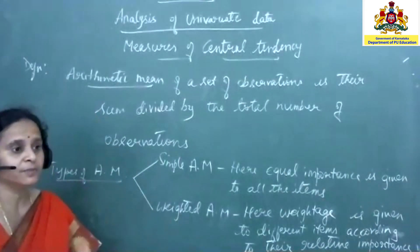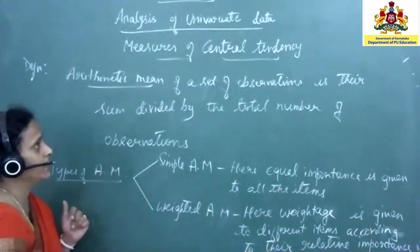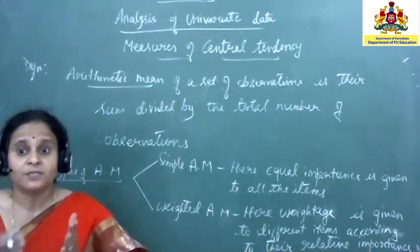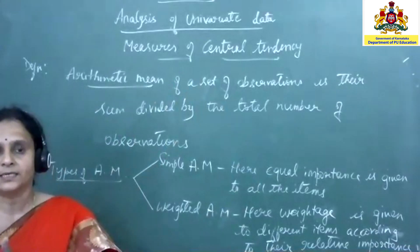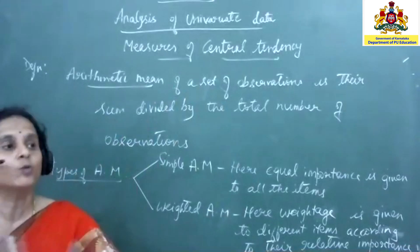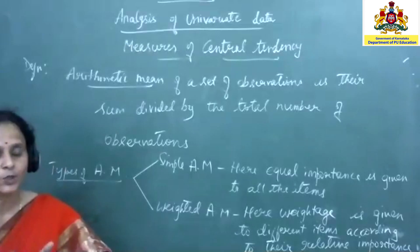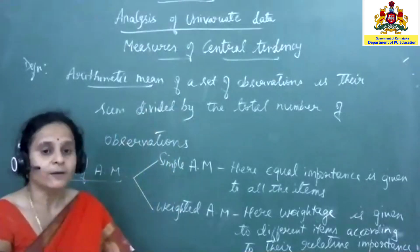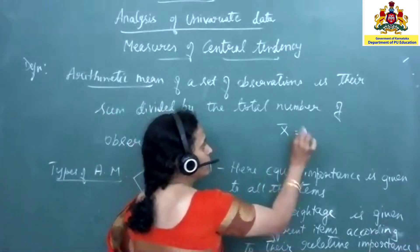Now, one more definition: arithmetic mean. We are all very well versed with arithmetic mean. The arithmetic mean of a set of observations — observation means data values — is the sum, which means the total, divided by the total number of observations.